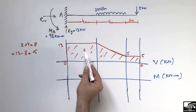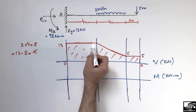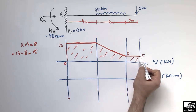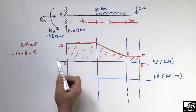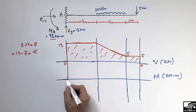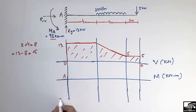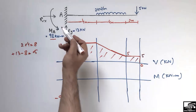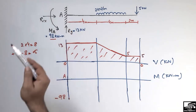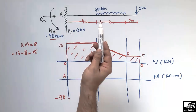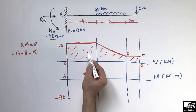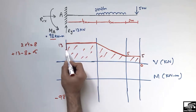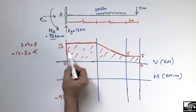To draw the bending moment diagram, we use the areas from the shear force diagram. We can see a rectangle box, a trapezoid box, and another rectangle box. The bending moment at point A is 98 kN·m, but since it is a cantilever beam, the moment at the support is always taken as negative, so it is minus 98 kN·m. We always provide reinforcement at the top of a cantilever beam because the moment is negative.